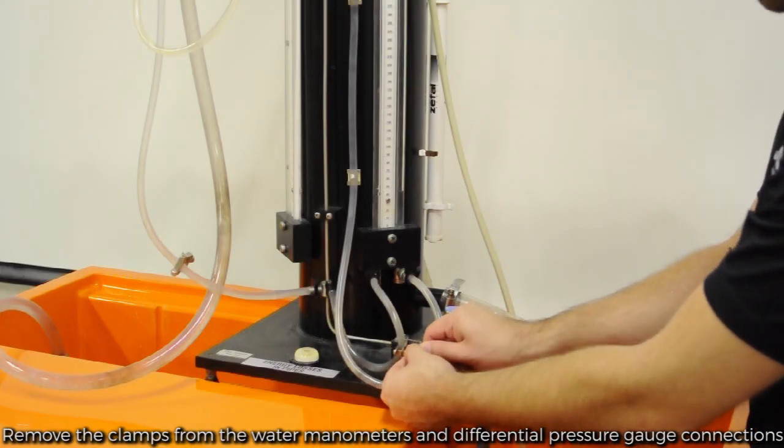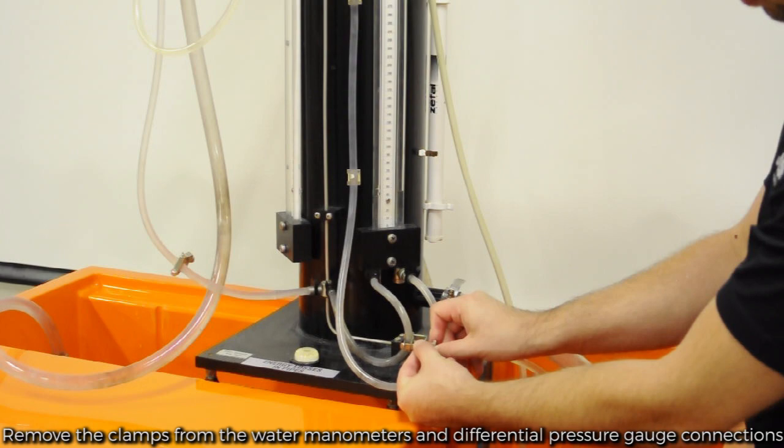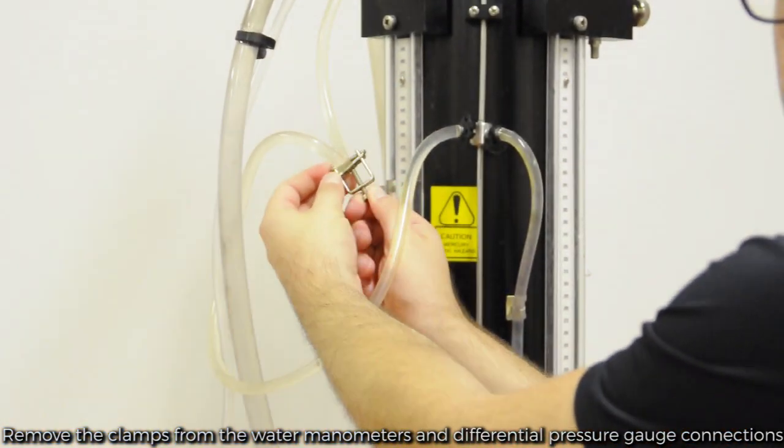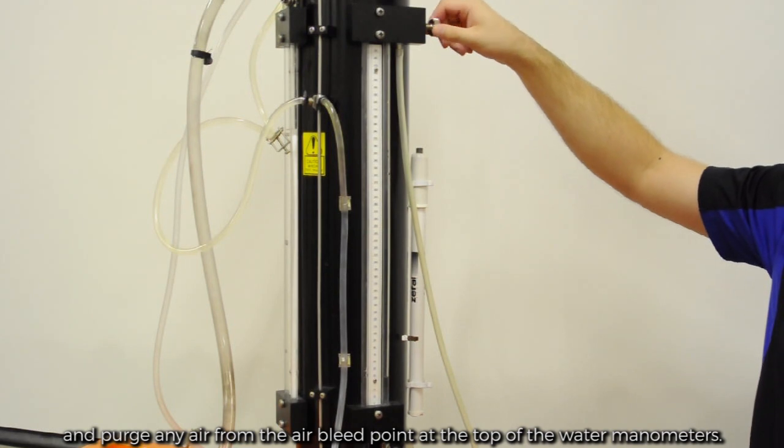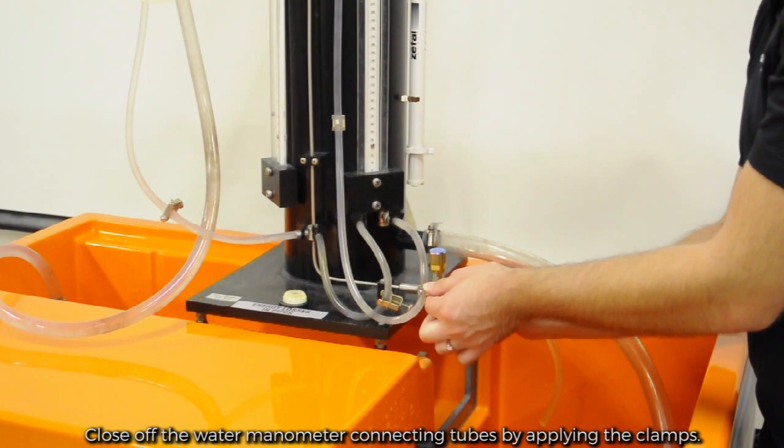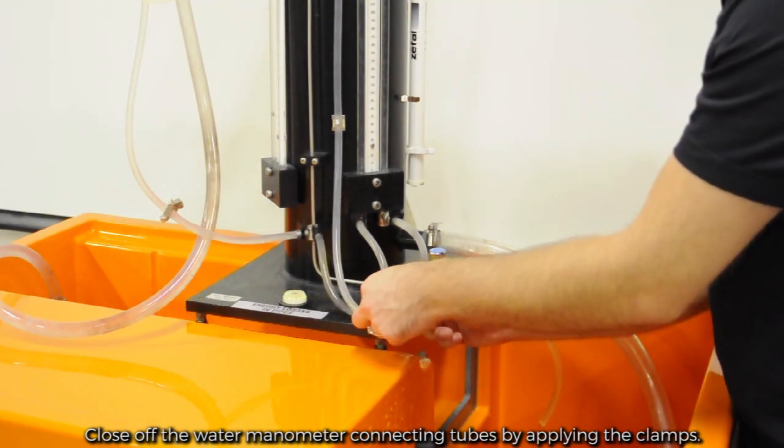Remove the clamps from the water manometers and differential pressure gauge connections. And purge any air from the air bleed screw at the top of the water manometers. Close off the water manometer connecting tubes by applying the clamps.